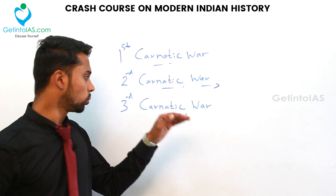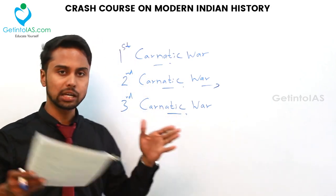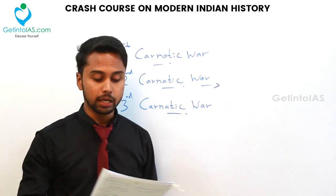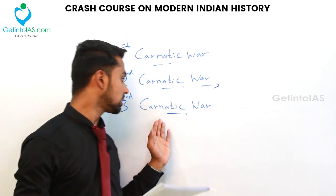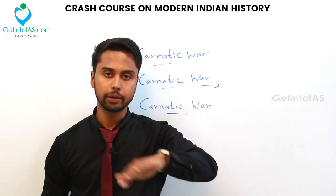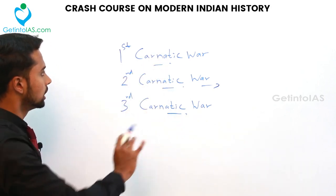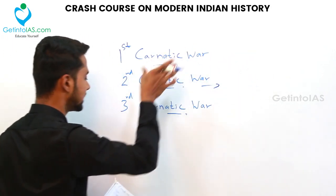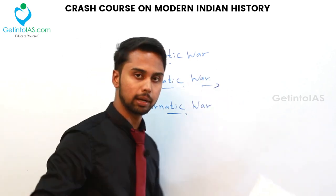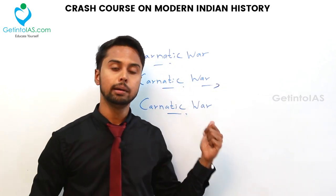The Third Carnatic War was triggered by the capture of Chandernagore by Robert Clive. It was a long seven-year war, ending with the Battle of Wandiwash where the French were completely defeated, and the Treaty of Paris was signed. So the treaties are: First Carnatic War — Treaty of Aix-la-Chapelle; Second Carnatic War — Treaty of Pondicherry; Third Carnatic War — Treaty of Paris. Portuguese fell at Battle of Swally, Dutch at Battle of Bedara, and French at Battle of Wandiwash. The British subdued every trading company and became victorious, firmly fixing their trading position in India.